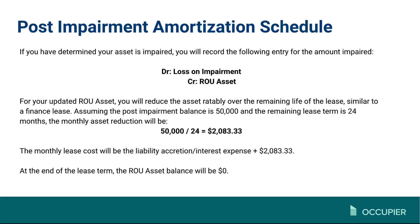To walk through what a post-impairment amortization schedule would look like: if you have an impairment, your journal entry would be a debit to the loss and a credit to the right-of-use asset to bring that asset value down to its fair value. For example, if the fair value is $50,000 and the remaining lease term is 24 months, your lease cost would be $2,083 per month, plus the liability accretion and interest expense.